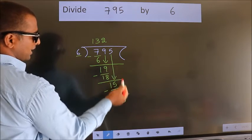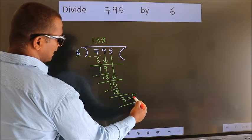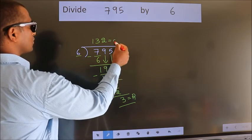No more numbers to bring down, so we stop here. This is our remainder. This is our quotient.